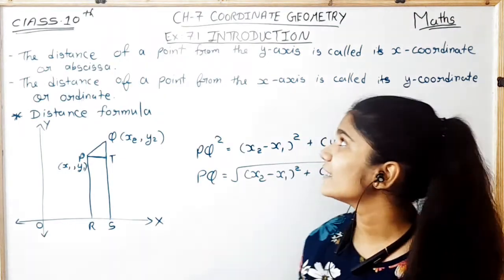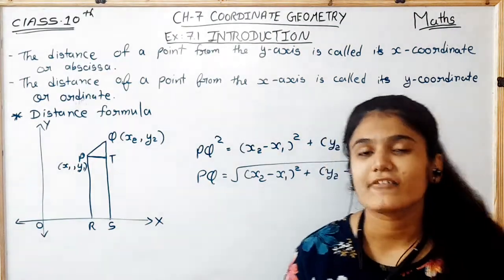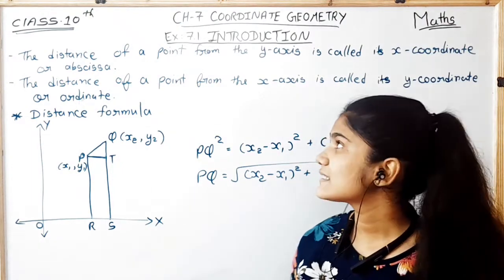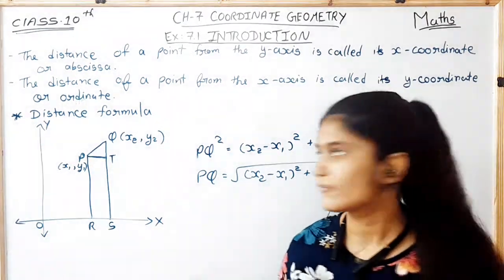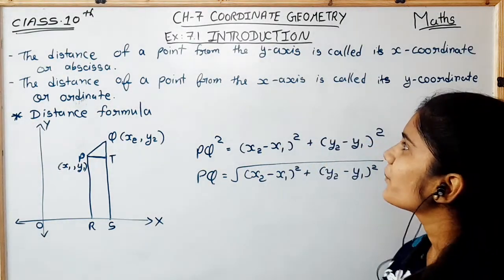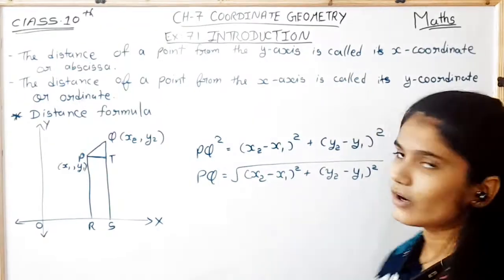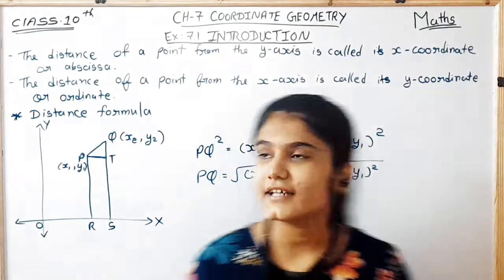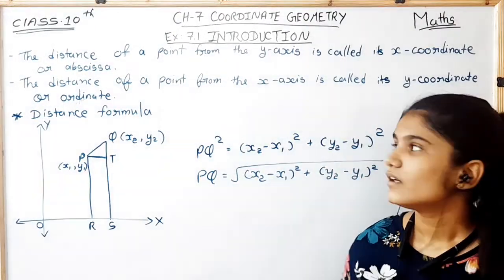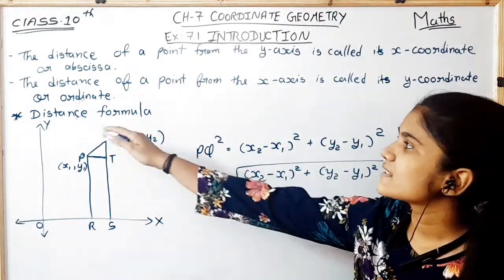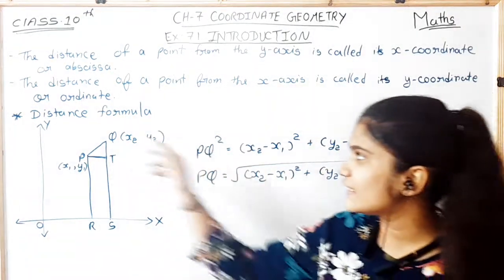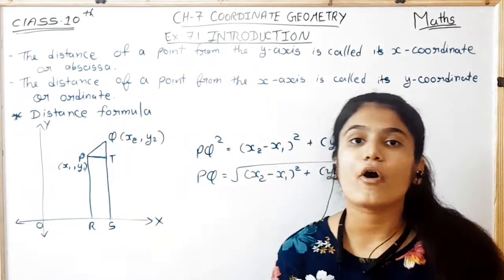Hello guys, today we are starting our Chapter 7, Coordinate Geometry. We will start with the introduction of Exercise 7.1. The distance of a point from the y-axis is called its x-coordinate or abscissa. And the distance of a point from the x-axis is called its y-coordinate or ordinate.